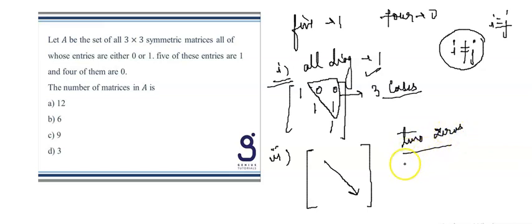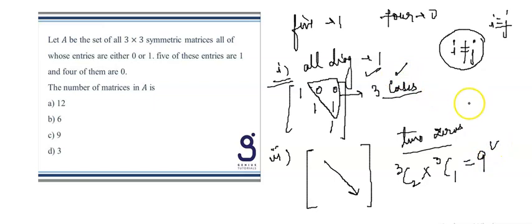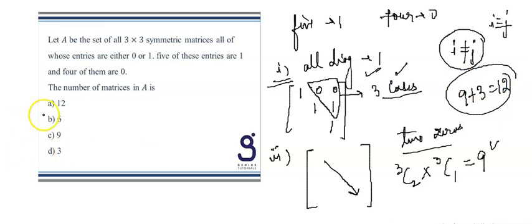These two zeros can be selected in C(3,2) = 3 ways. For the upper triangular part, we have three places of which one entry is zero and two are one — selected in C(3,1) = 3 ways. So total from Case 2 is 3×3 = 9. Adding 3 from Case 1, we get 12 such matrices total. So 12 is the correct answer for Part 1.